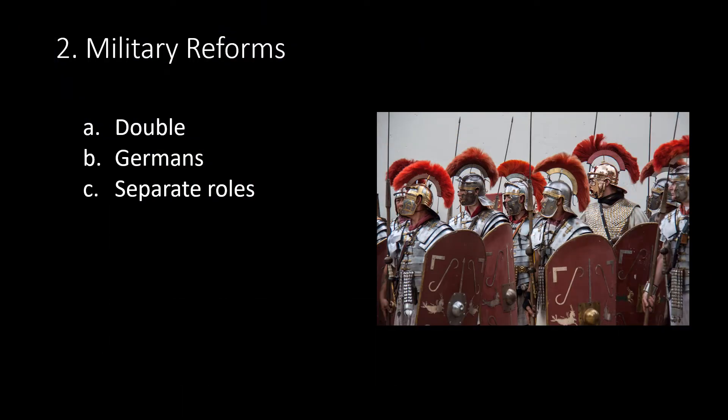Military reforms included the reorganization and enlargement of the army. They doubled the size of the army to secure the borders — it increased to 400,000 men including units filled with some Germans. The army was divided into two parts: garrison for the frontier as first line of defense, and mobile units. Wages for the new troops also added to the already crushing load of taxes. Their borders were however safe again. Military and civilian roles were kept separate.